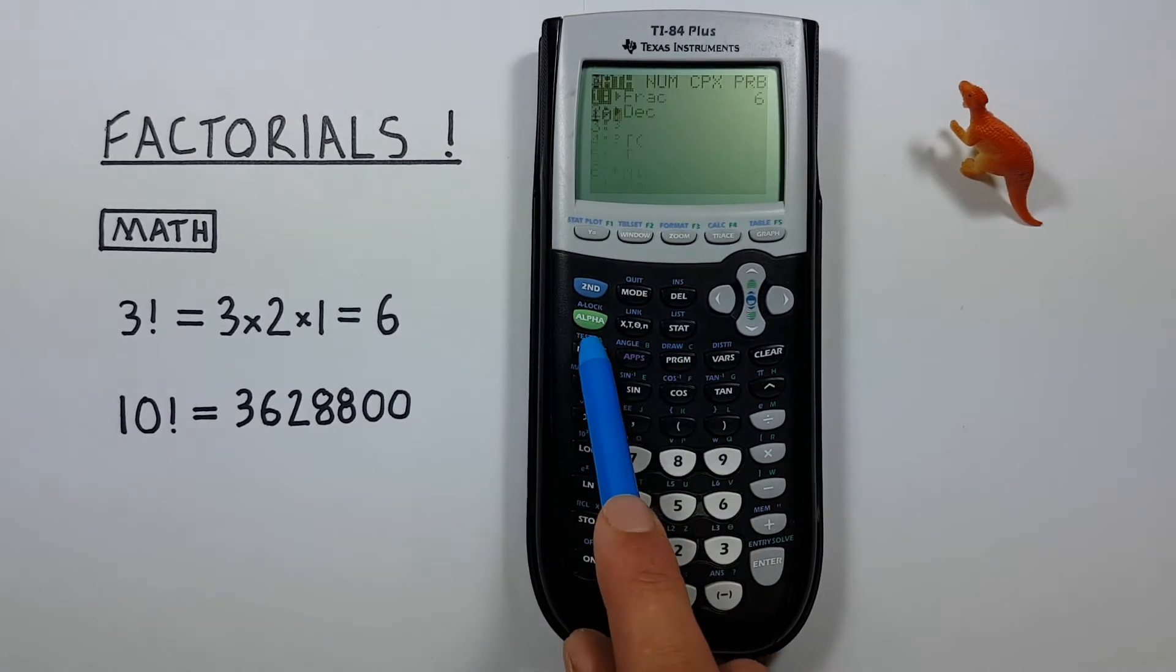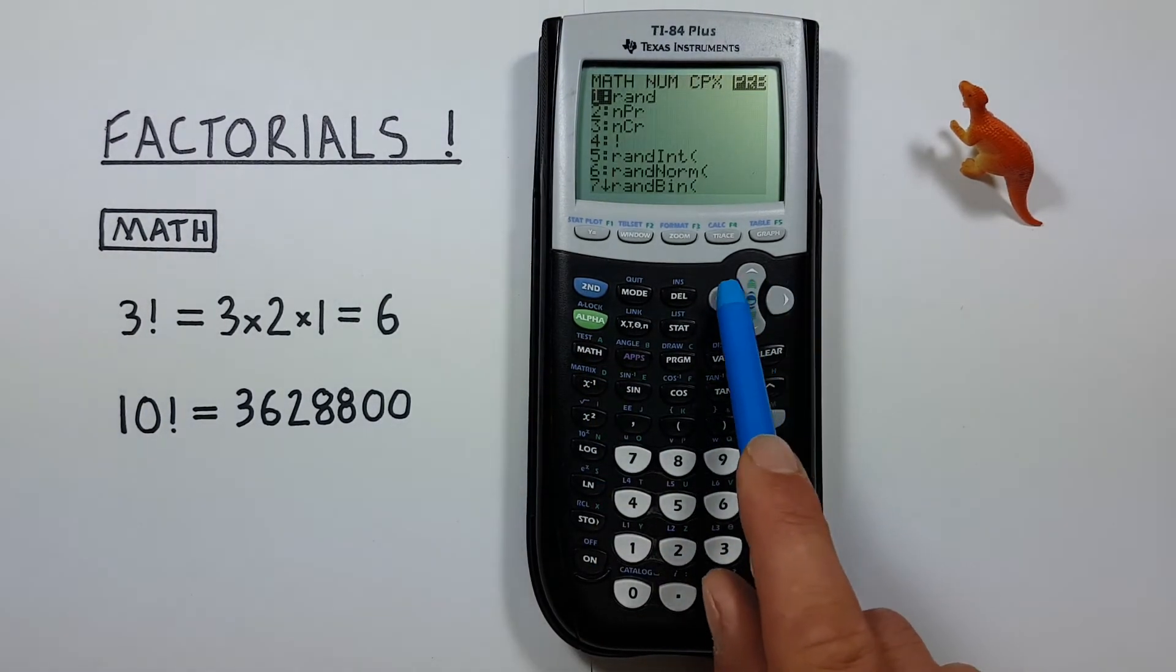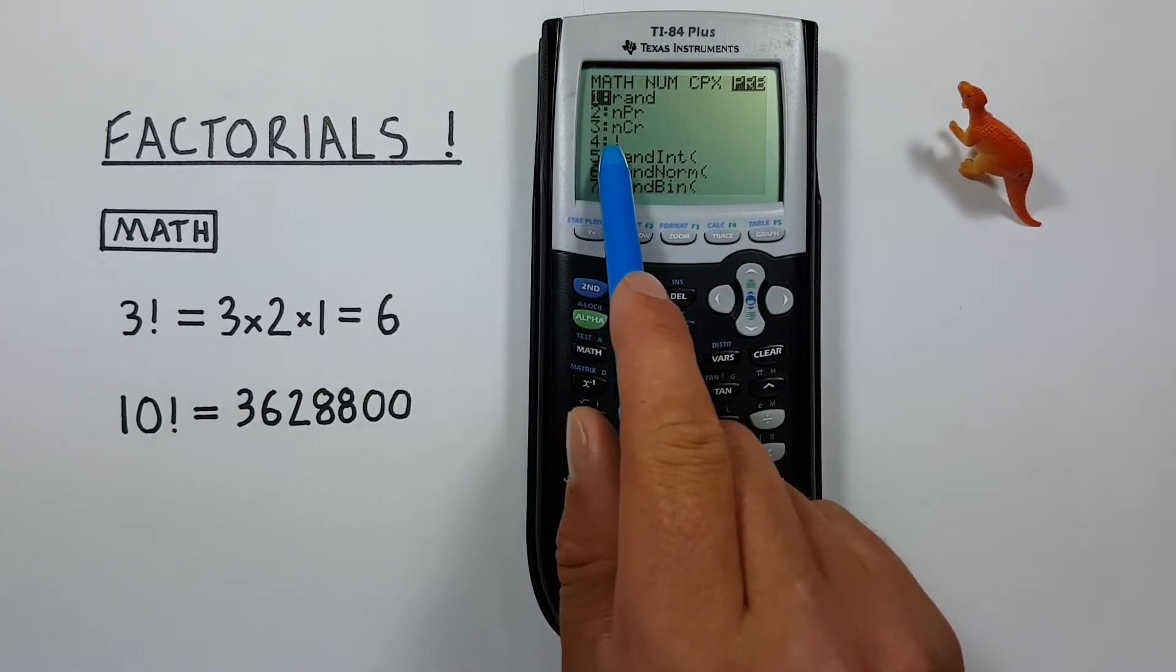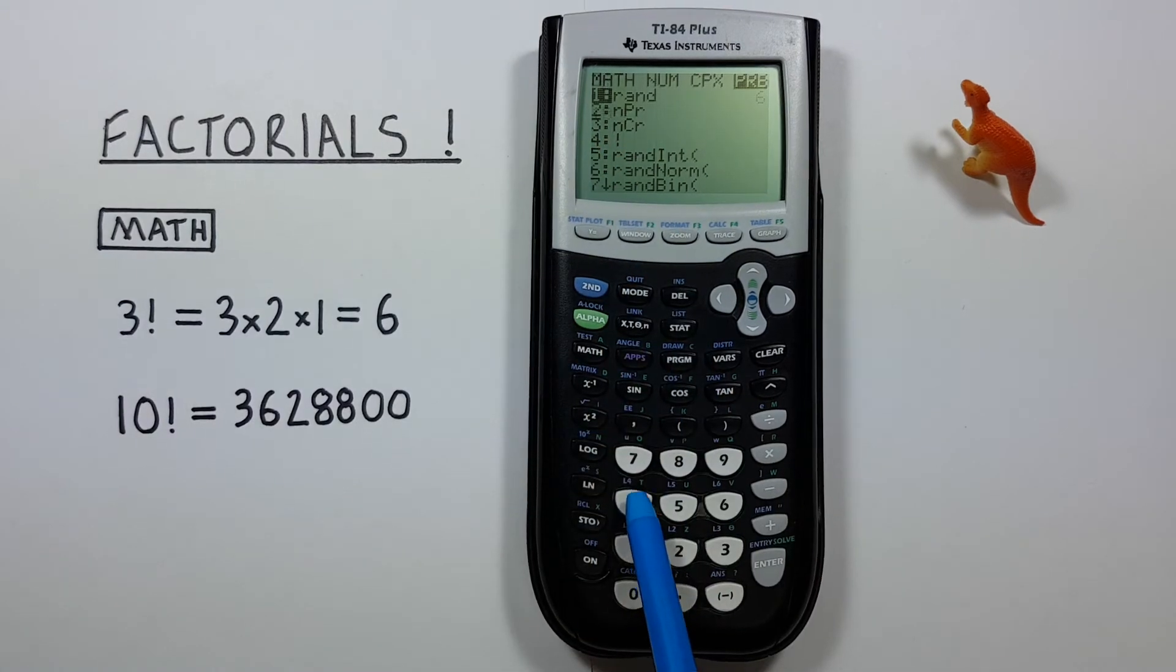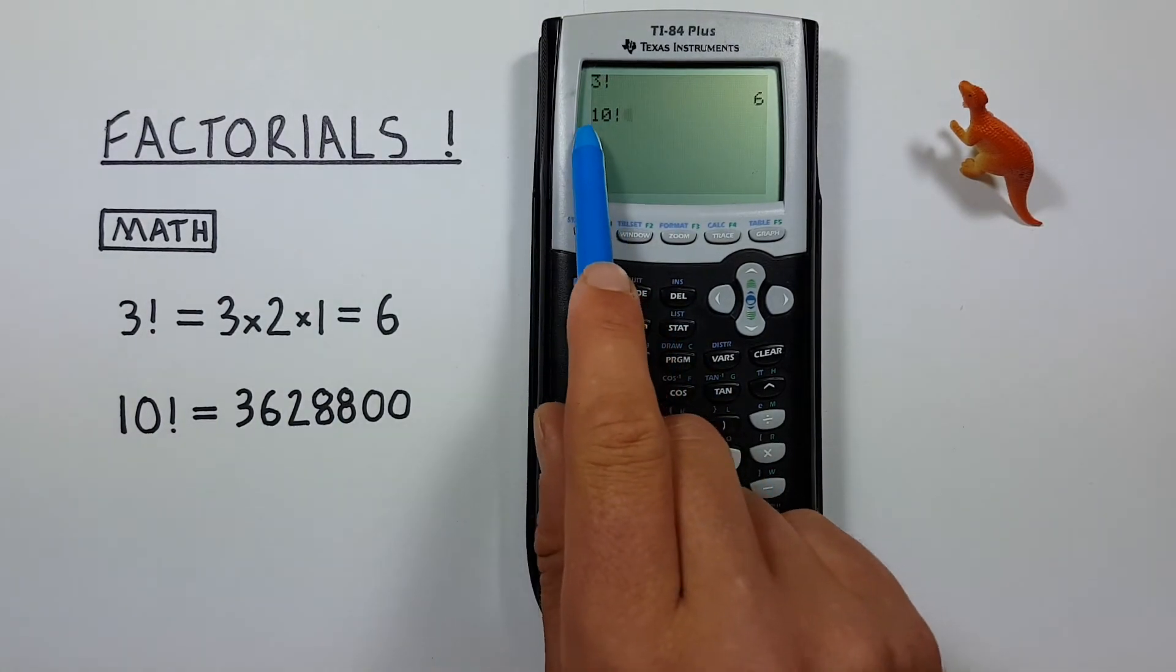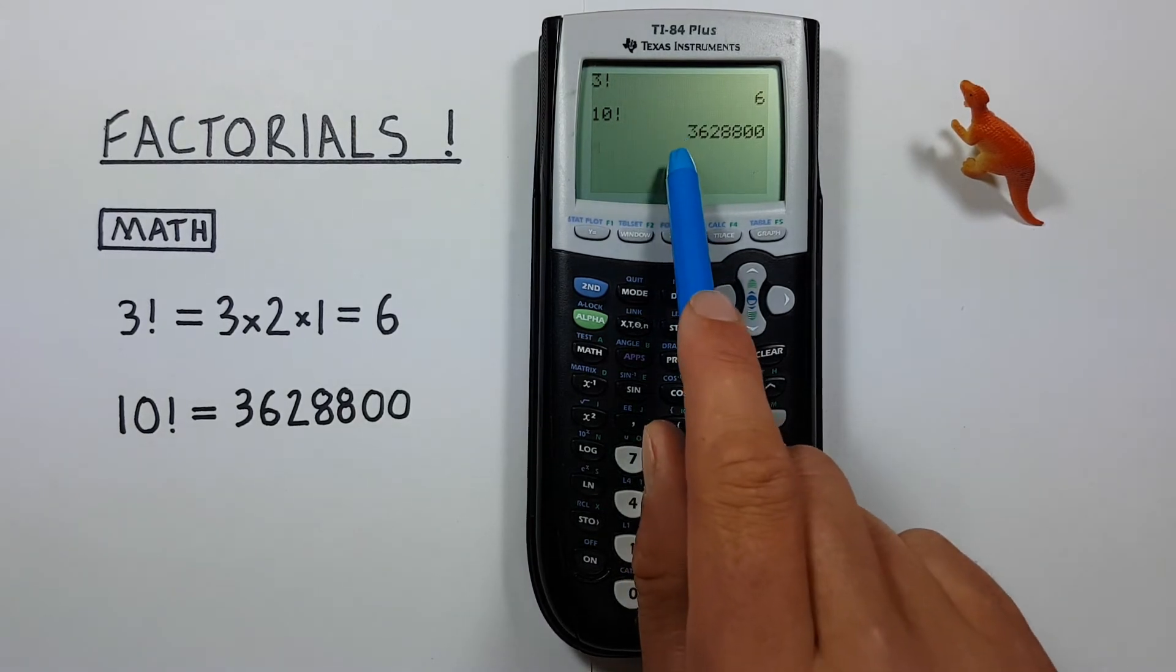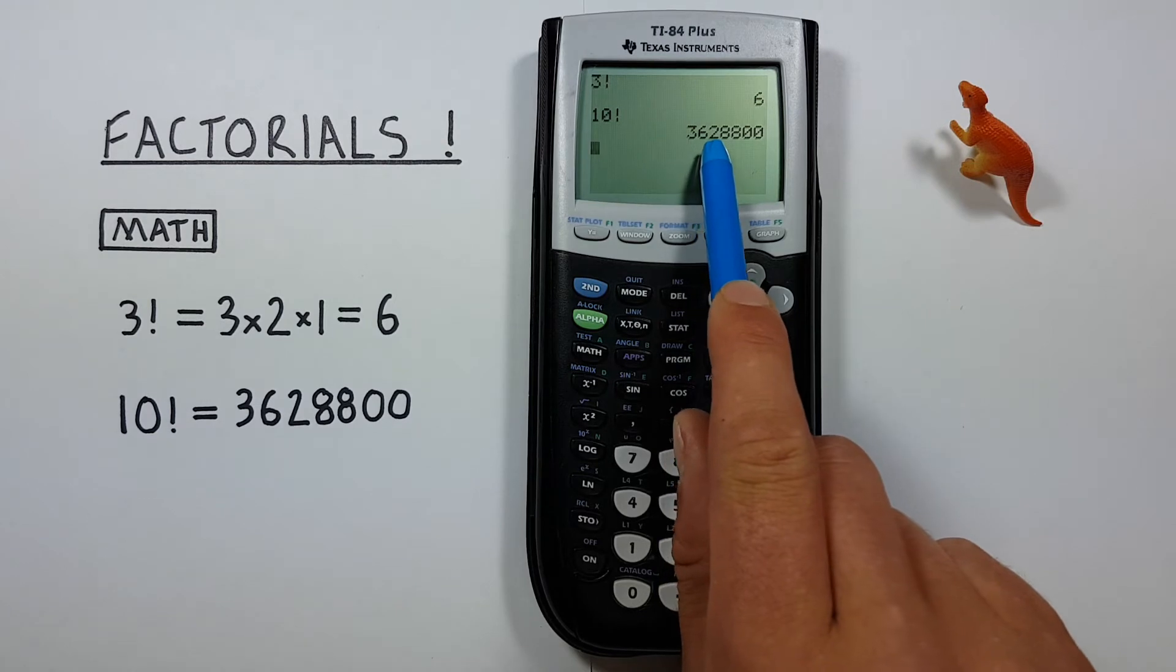Press the math key and then we can scroll left or right till we highlight PRB. And if we don't want to scroll down we can just press 4 because it's the fourth option. There we see we have 10 factorial. Press enter and we get a result of 3,628,800.